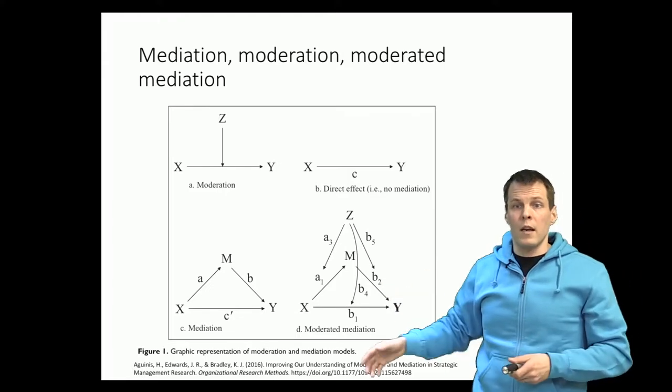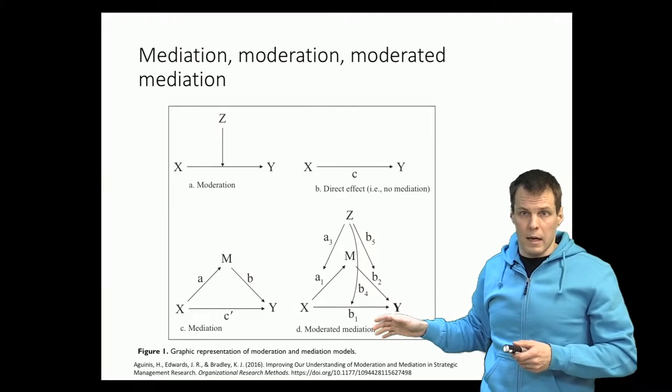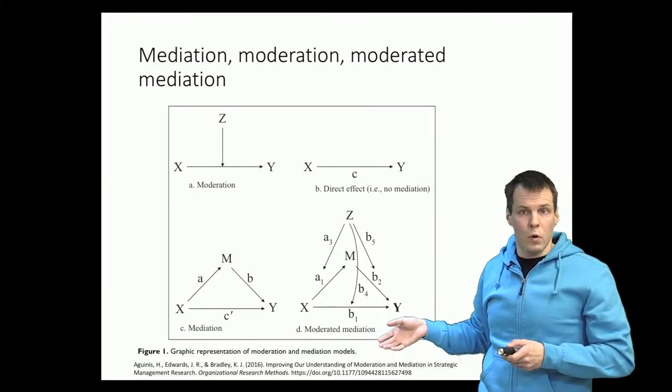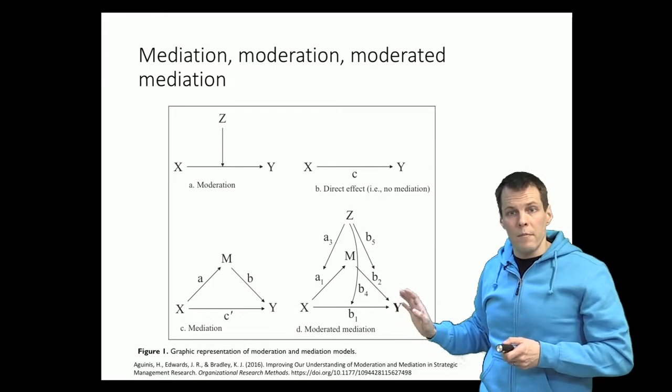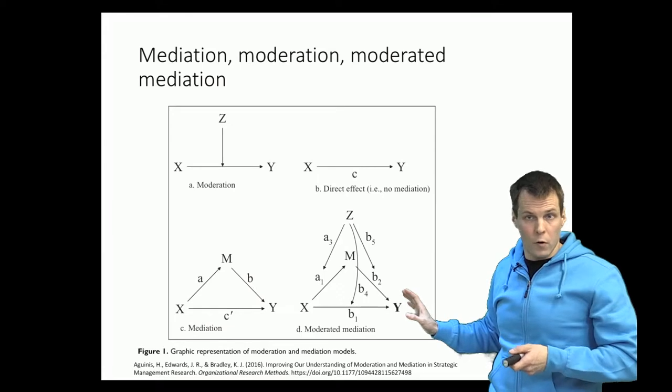It really gives you lots of options for variables, how you model them, and then you have to make a choice based on your theory. What is the best representation of your theoretical ideas? What's the best model for your particular study?